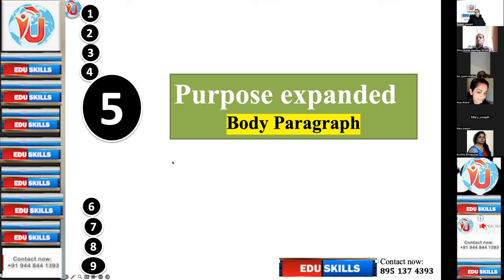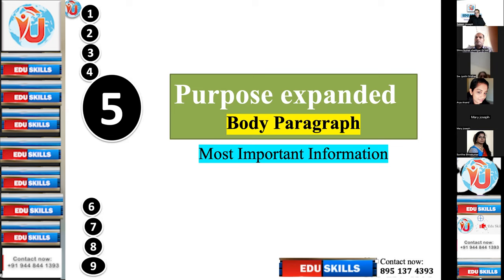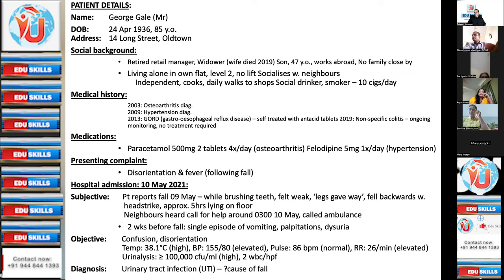We have already taken a session about the purpose of this particular case note on George Gale. Today we'll be taking the body paragraph — that is the second paragraph. If you consider the introductory paragraph as the first, this is the second paragraph, or the first body paragraph. This is the most important information, soon after the purpose paragraph. Today I'm going to teach you a special method to identify the relevant case notes — asking questions, looking into keywords, segregating them, and identifying the key issues.